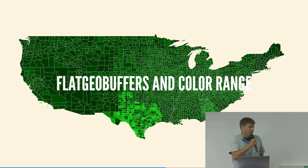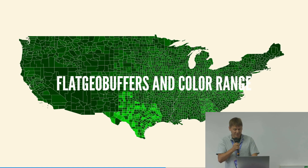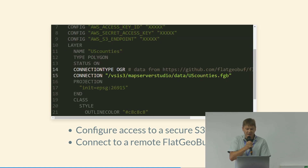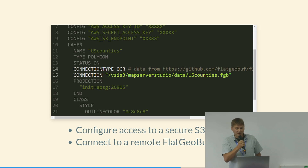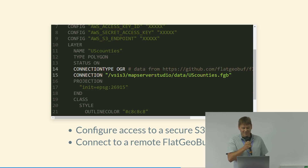There was also recent work on FlatGeobuf support — MapServer can read it using a native driver or the OGR driver. This file comes over the web — it's the counties in the US — applying a color range similar to the raster example. The nice thing about MapServer is it can read all formats that GDAL and OGR can read. You can also serve out from MapServer in any of those formats — someone was using MapServer to serve out FlatGeobuf via a WFS interface.